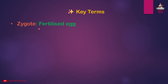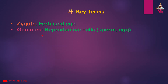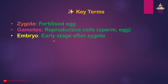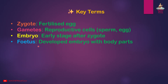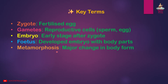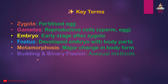Key terms: Zygote — a fertilized egg. Gametes — reproductive cells: sperm and egg. Embryo — the early stage after the zygote. Fetus — a developed embryo with body parts. Metamorphosis — major change in body form. Budding and binary fission — asexual methods.